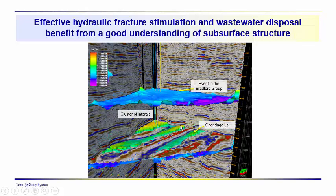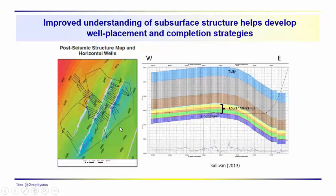3D seismic can really reveal that we have detachment down here, and those detached structures do not go up into the shallower Devonian section — they come up out of the deeper Salina salt, which is a detachment horizon in this area. Looking at lessons learned from 3D seismic, we see in this particular area — this is a paper by Sullivan — that the well pads are placed over the faults. We have laterals going out to the northwest and to the southeast from pads located directly over the fault.